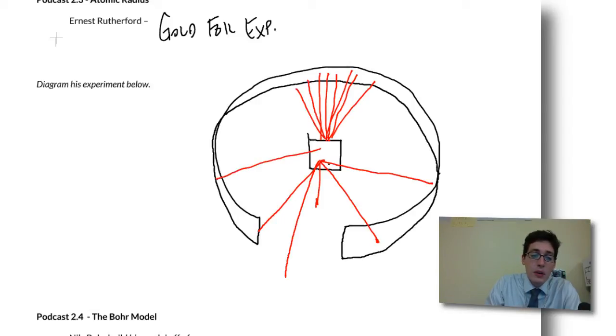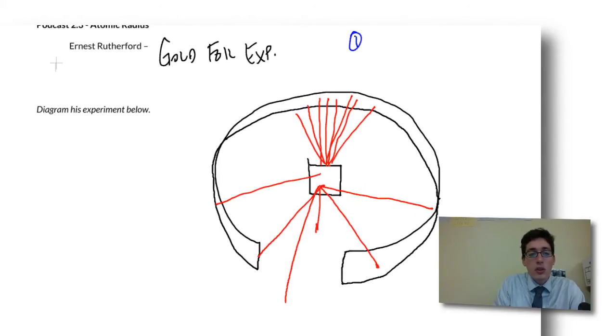And sometimes he would get them bouncing off to the side, but what it showed is that this piece of gold foil was not solid in the sense that we think of as solid. And it showed two things, really.